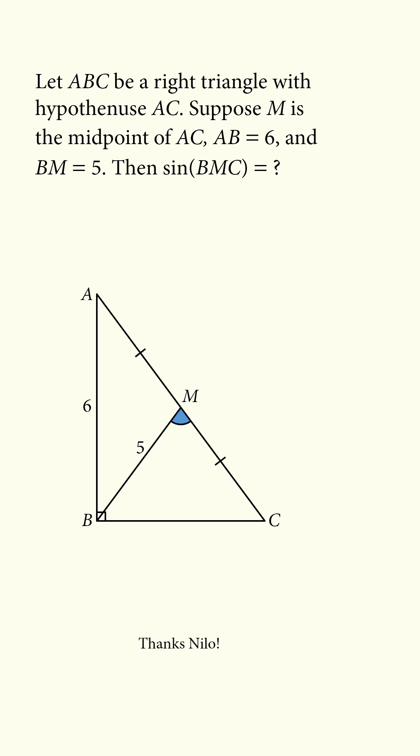Here's a fun trigonometry problem. Let ABC be a right triangle with hypotenuse AC. Suppose M is the midpoint of AC, AB equals 6, and BM equals 5. Then the sine of angle BMC is equal to what?